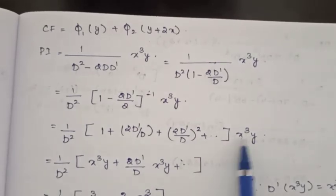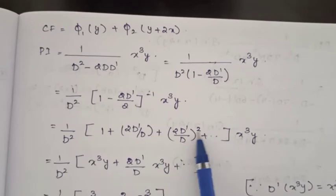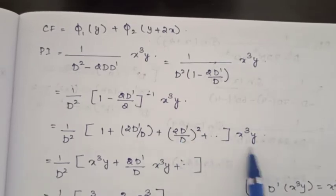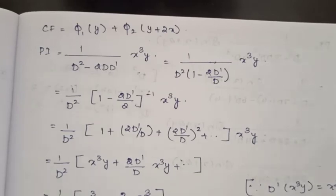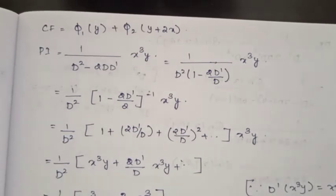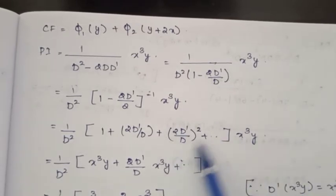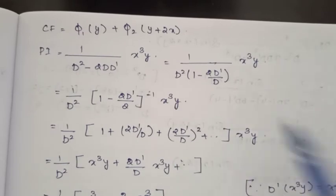For x cubed y, differentiating two times with respect to y — the first differentiation gives 1, and differentiating again gives 0. So that third-order term becomes 0 and is omitted.